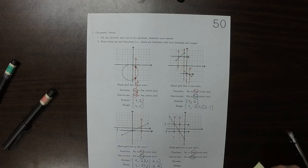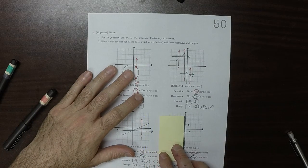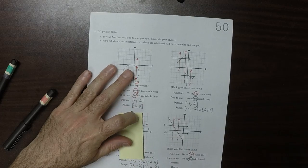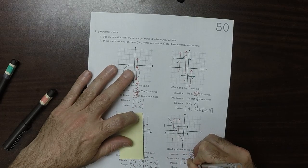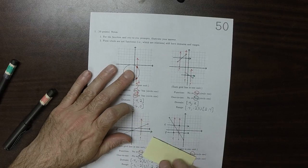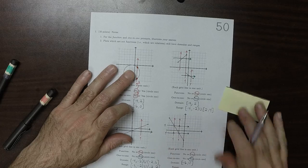And then the domain is all the way from here to there, so negative six to zero, and the range from negative four to five.